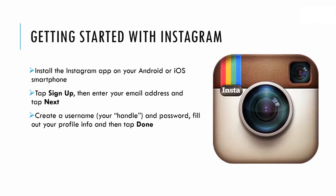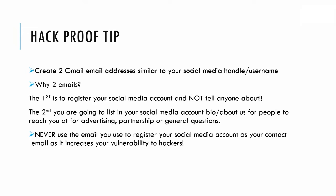We'll get into greater detail on profile optimization later, but for now we just want to get your handle locked up on Instagram. One hack-proof tip: create two Gmail email addresses similar to your social media handle or username. The first email is to register your social media account and not tell anyone about. The second you're going to list in your social media account bio or about us section for people to reach out to you for advertising, partnerships, or general questions.